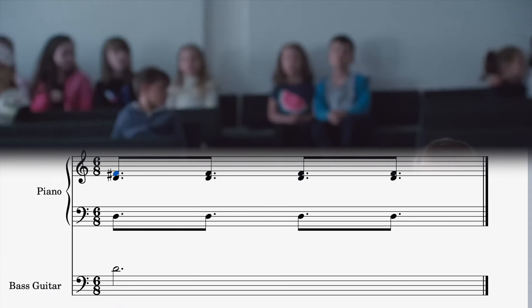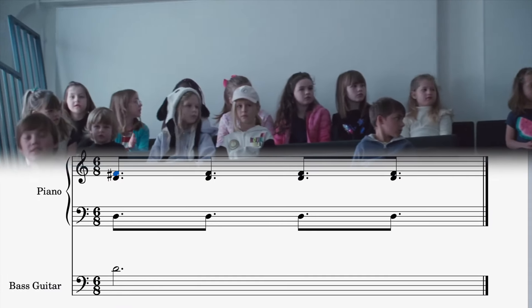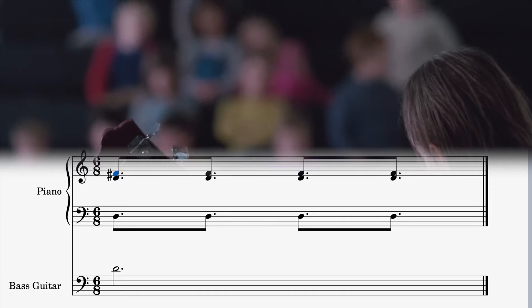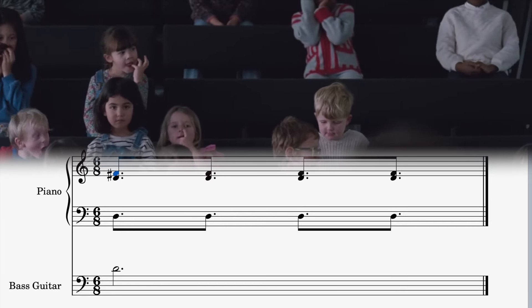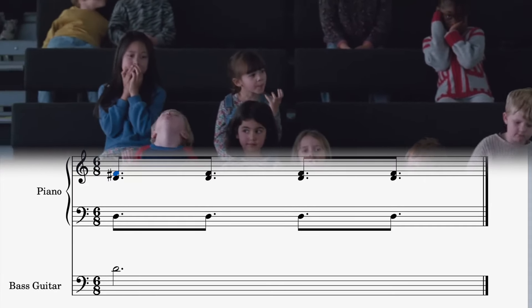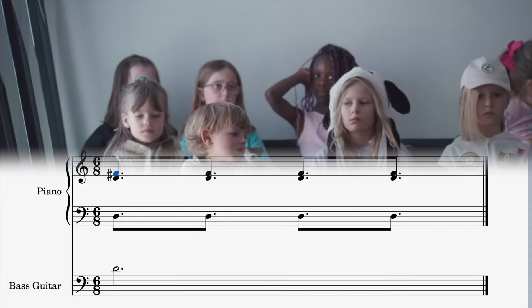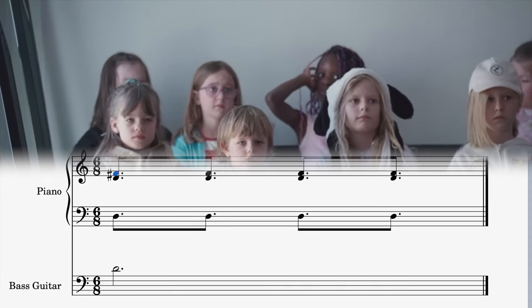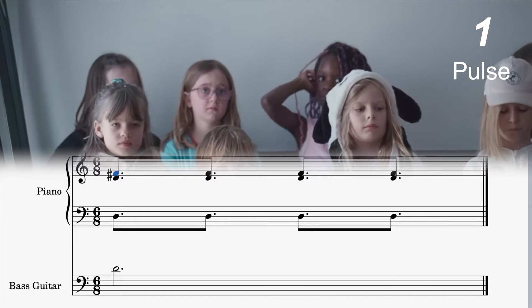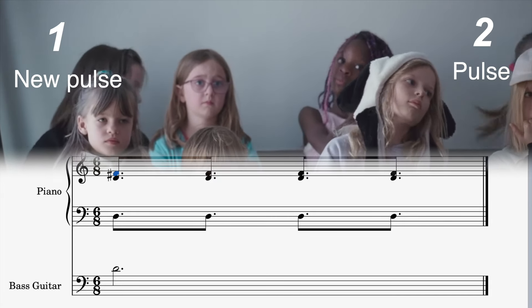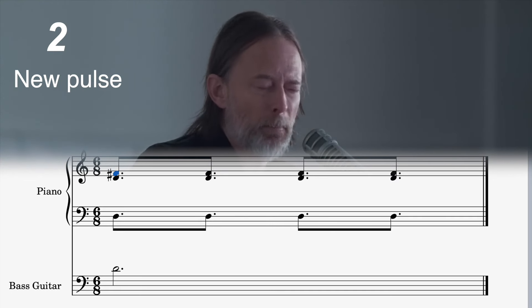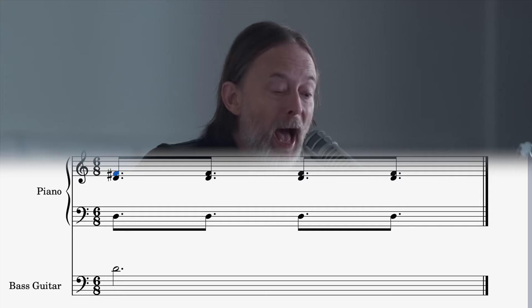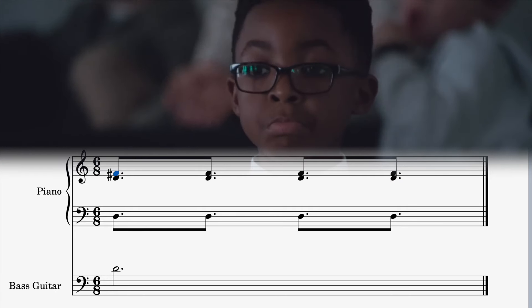Anyway, we hear this polyrhythm again at the end of the A section, but this time it sets up a metric modulation. That 4 polyrhythm now becomes the main pulse, and the music feels like it slows down into a very slow 6/8. It's a very clever way of changing the time feel. I like the way it foreshadows this metric modulation earlier on in the song.